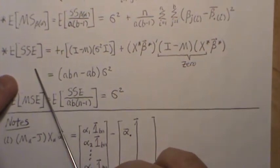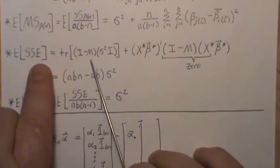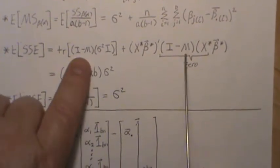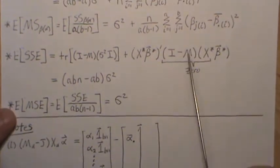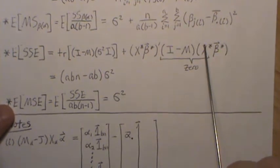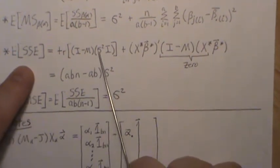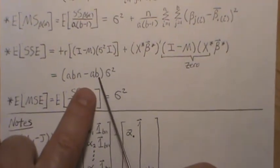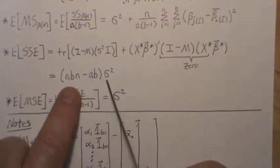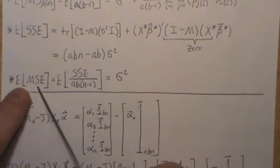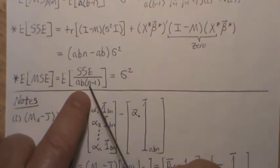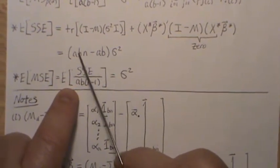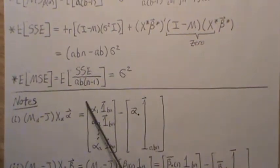The expected value of the sum of squares for error is the trace of the quadratic matrix times the variance of Y, plus the mean of Y times (I minus M) times the mean of Y. The second term is zero because (I minus M) projects orthogonally onto the column space of x-star. Sigma-squared comes out front; the rank of I is ABN and the rank of M is AB, giving ABN minus AB = AB(N minus 1). Dividing by that rank gives the expected mean squared error equal to sigma-squared, so it is an unbiased estimate of sigma-squared.